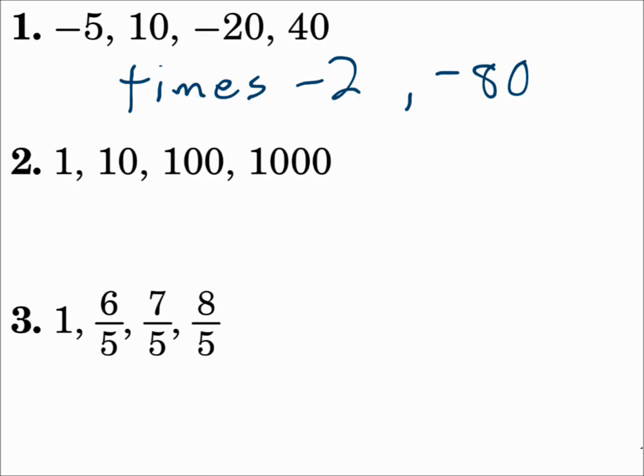Number 2: 1, 10, 100, 1000. You might check addition here. From 1 to 10 you add 9, from 10 to 100 you add 90, from 100 to 1000 you add 900. That's not the same. But if you try multiplication, you're multiplying by 10 each time. And if you're multiplying by 10, the next number would be 10,000.